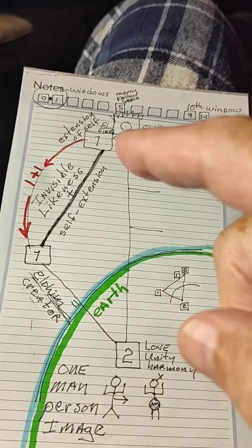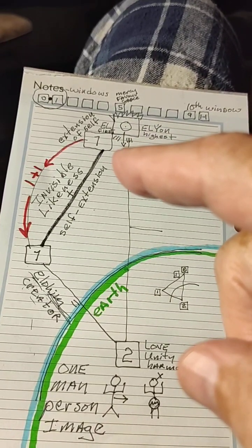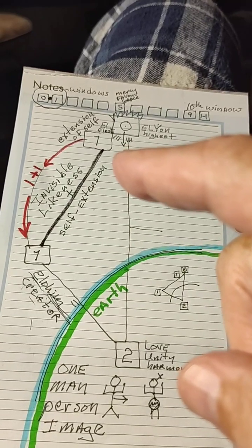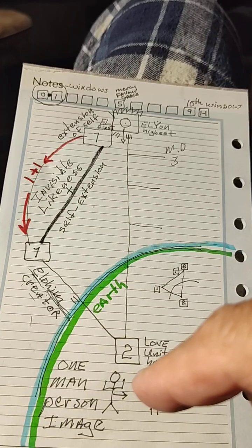This is God, zero with a dot in the middle. This is the seven spirits before the throne, before God, that are sent to earth to do his will.